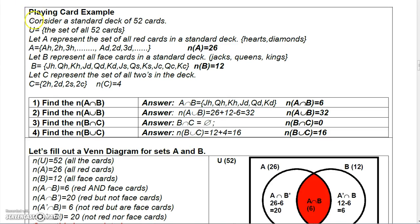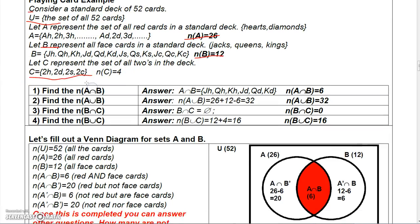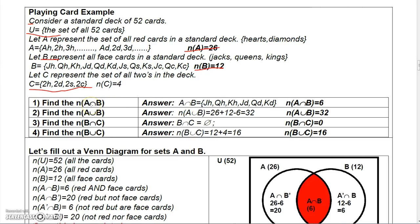Make sure you're familiar with a standard deck of 52 cards. Our universal set is all 52 cards. Let A be the set of all red cards — 13 hearts and 13 diamonds — so the number in A is 26. Let B represent the set of face cards: Jack, Queen, and King of hearts; Jack, Queen, and King of diamonds; Jack, Queen, and King of spades; Jack, Queen, and King of clubs — so there are 12 face cards. Let C represent the set of twos; there are four twos in a standard deck. For A intersect B, those are the six cards that are both red cards and face cards: Jack, Queen, King of hearts and Jack, Queen, King of diamonds.